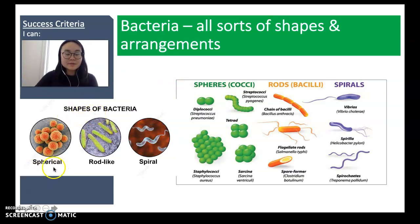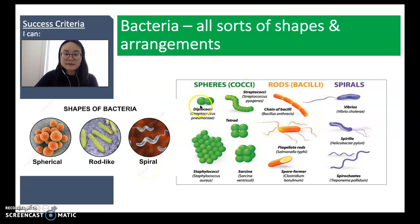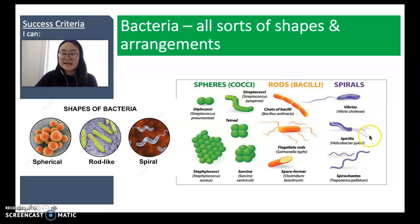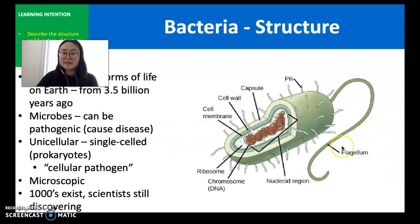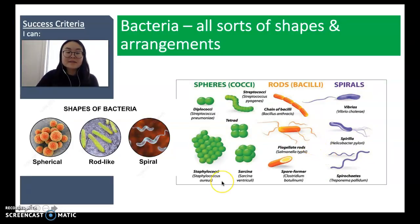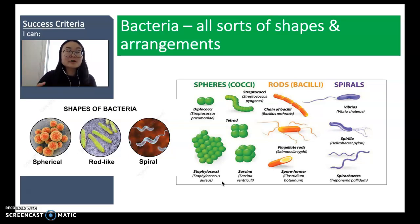Bacteria come in all sorts of shapes, sizes, and arrangements. Some common ones are spherical (round), rod-shaped (like little pills), or spiral. You can have individual spheres, pairs, groups of four, cube arrangements, clusters, or spheres lined up in a row. Some bacteria have a tail-like structure called a flagellum — or flagella in plural — which you learned about last year, and some don't. Scientists use these shapes and arrangements to classify and group the many different bacteria that exist.